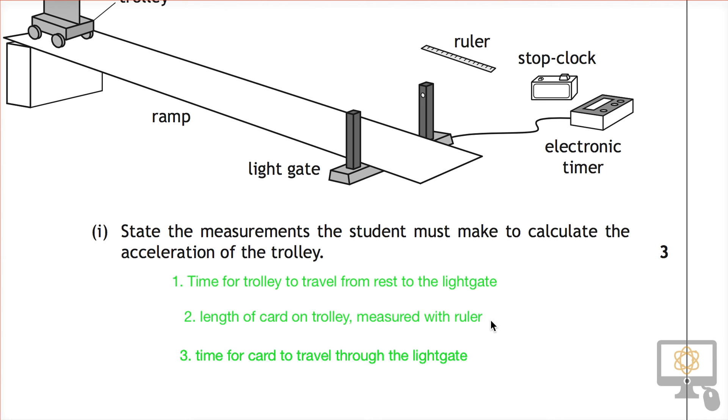For the second one, you would need to be careful just to be specific about the length of the card that you're measuring. It's the card that passes through the light gate, not the trolley itself. So if you said the length of the trolley, you might get the mark, but it's important to say the length of the card.